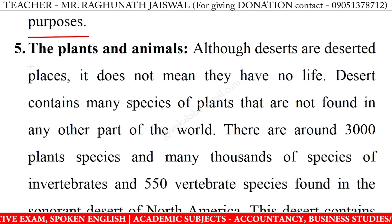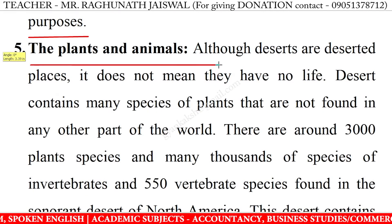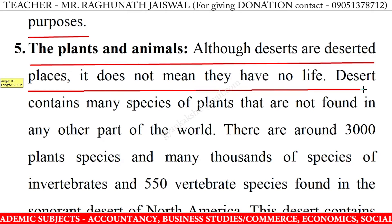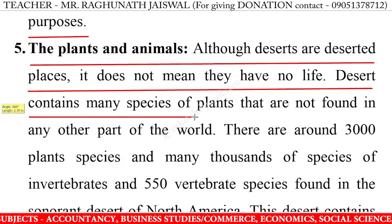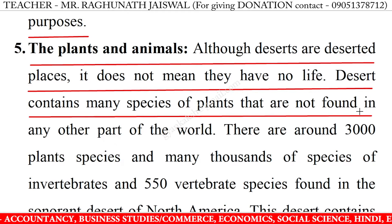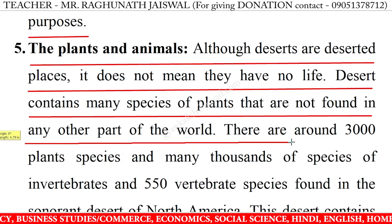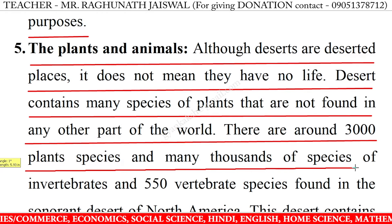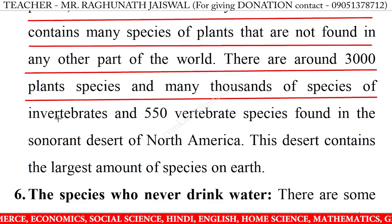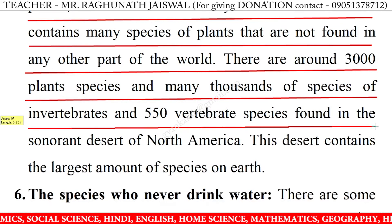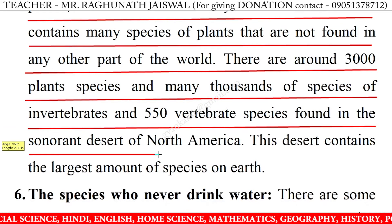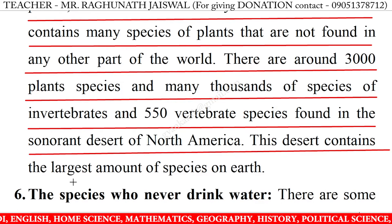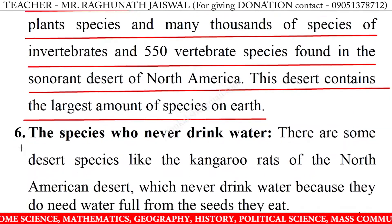5. The plants and animals: Although deserts are deserted places, it does not mean they have no life. Deserts contain many species of plants that are not found in any other part of the world. There are around 3,000 plant species and many thousands of species of invertebrates and 550 vertebrate species found in the Sonoran Desert of North America.